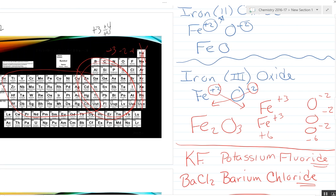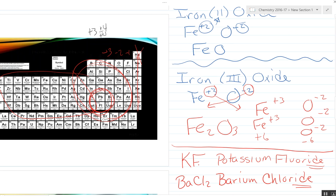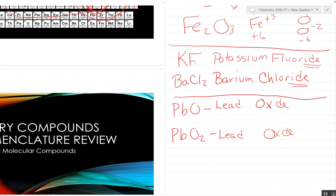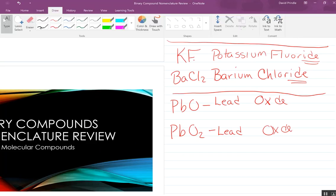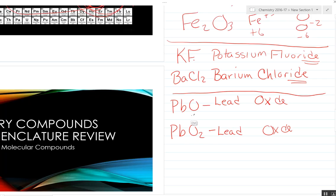So we have a negative two charge on this oxygen, so this has to be a plus two. So this is going to be lead(II) oxide.